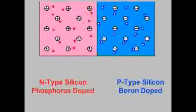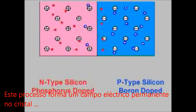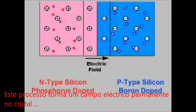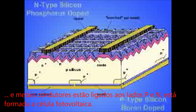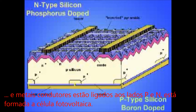This process establishes a permanent electric field in the crystal. When a p-n junction is made so that light can strike its top surface and metal conductors are attached to the p- and n-type sides, a solar cell is formed.